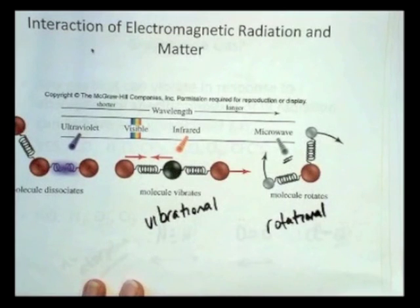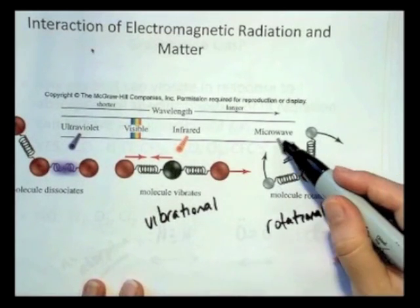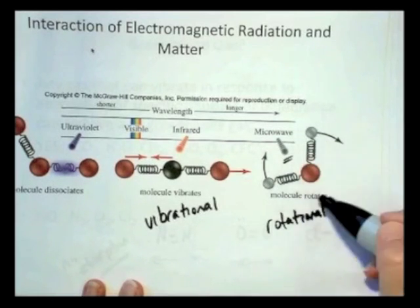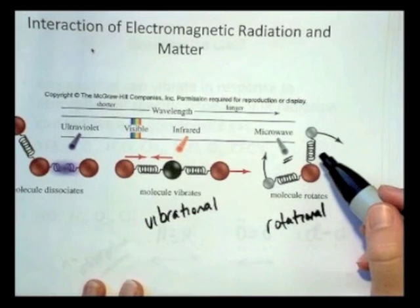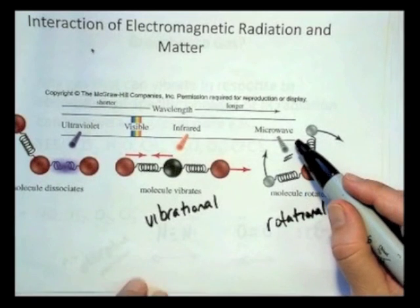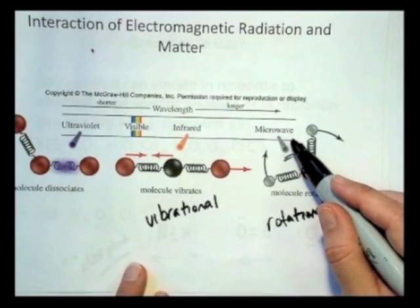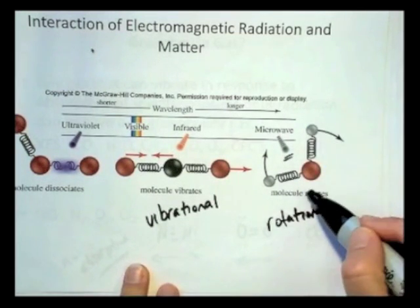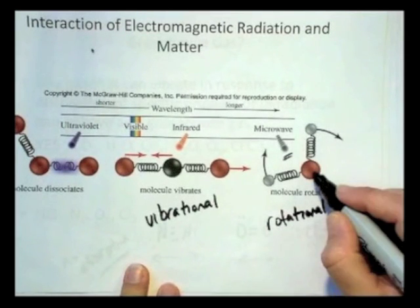If the microwave is of the right energy, when it comes in contact with the molecule, it's going to increase the rotation of that molecule. And so that's how microwave ovens work. The microwaves that are emitted in your microwave oven are tuned to the exact frequency that is the rotational motion of water molecules.